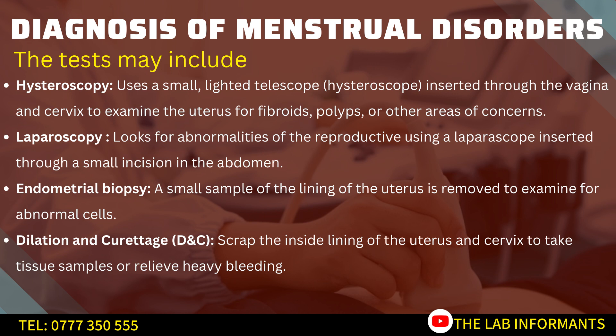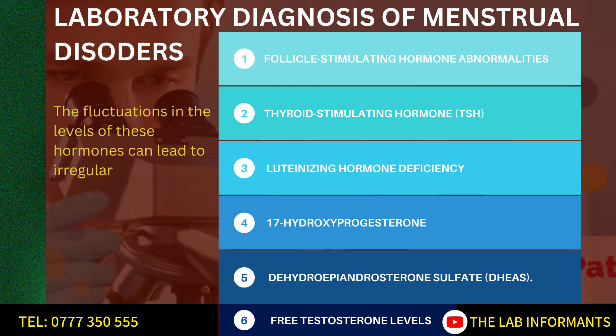Narrowing down to laboratory diagnosis of menstrual disorders: hormonal fluctuations can lead to irregular periods. The laboratory can measure follicle-stimulating hormone (FSH), thyroid-stimulating hormone (TSH) as a contributing factor, luteinizing hormone (LH), and 17-hydroxyprogesterone. The lab can also detect levels of DHEA-S as a cause of menstrual disorder, and elevated testosterone levels — male hormones — which can also lead to menstrual disorders.